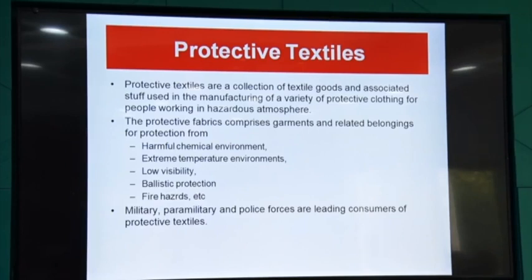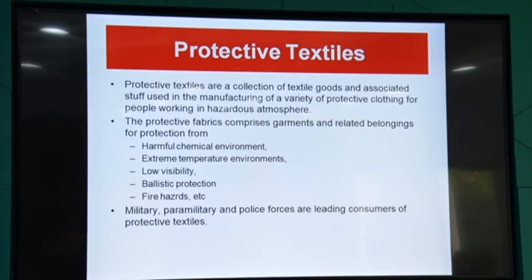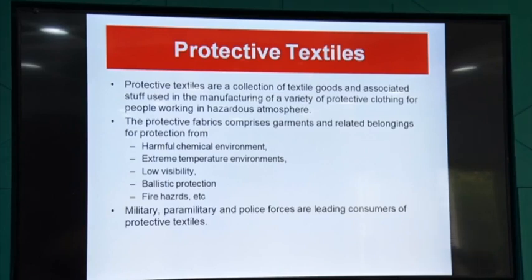If we define protective textiles, it is a collection of textile materials or goods and associated stuff — it may be zippers and other things also — used in the manufacturing of a special variety of protective textiles. These may be used in different hazardous conditions, which may be related to chemicals, nuclear biological, or war-type situations. They may be used in low visibility conditions, bulletproof jackets, and fire hazards. These are the conditions where you can use protective textiles.